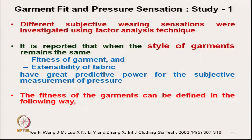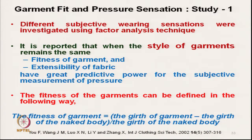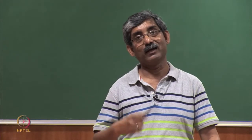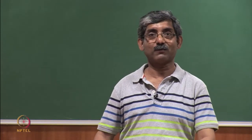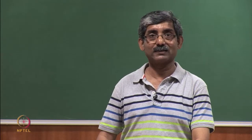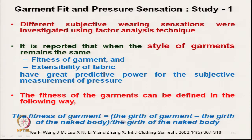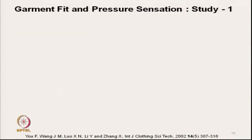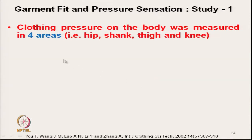The fitness of garment can be expressed by an F value, as seen earlier. Here, fitness of garment is expressed in terms of the girth of the garment and the girth of the naked body divided by the girth of the garment. With that expression, one can express the fitness of the garment. Clothing pressure was assessed at four different areas: hip, shank, thigh, and knee.